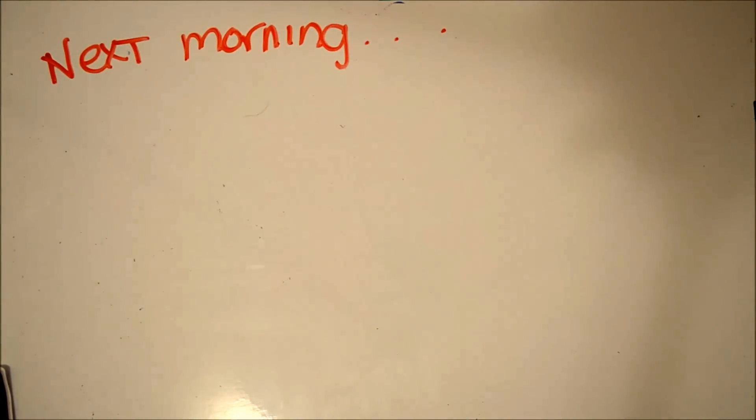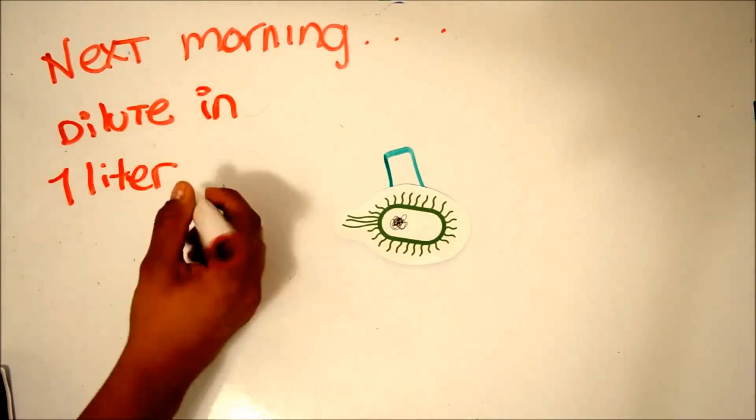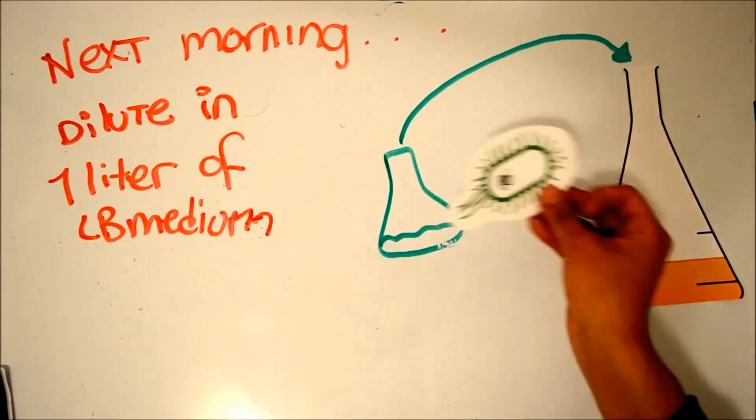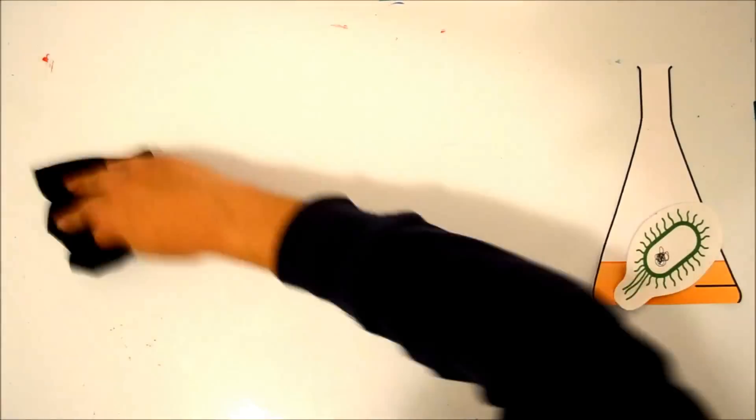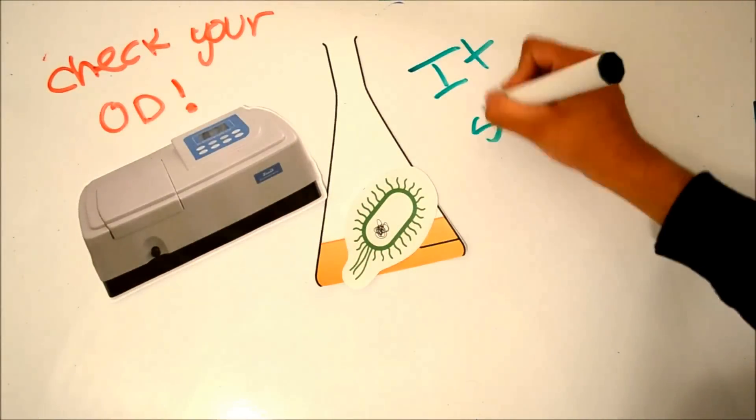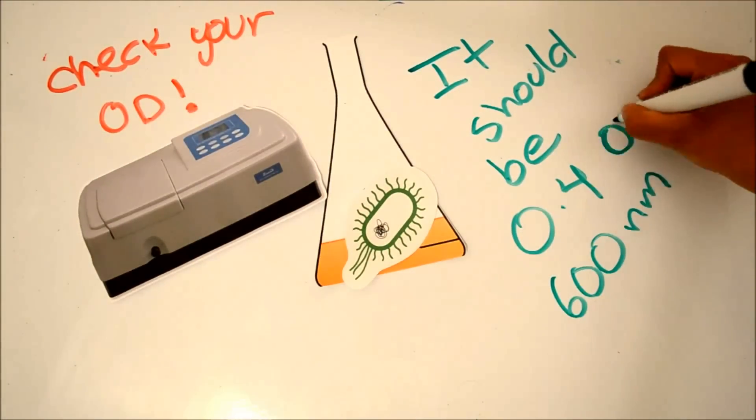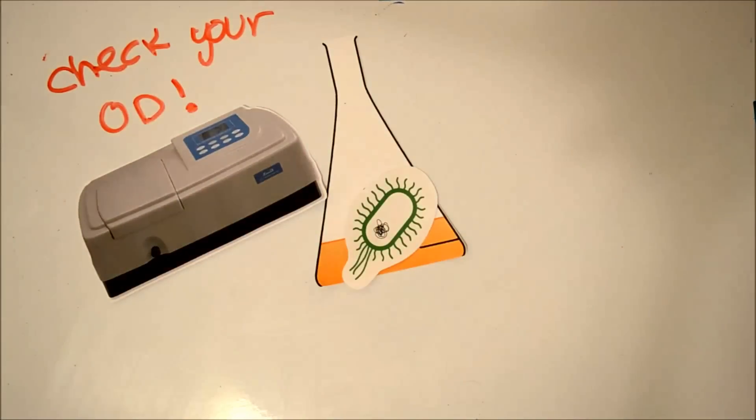Next morning, subculture in 1 liter of LB medium and incubate at 37 degrees until it reaches late logarithm phase, reading 0.4 OD 600 nanometers.